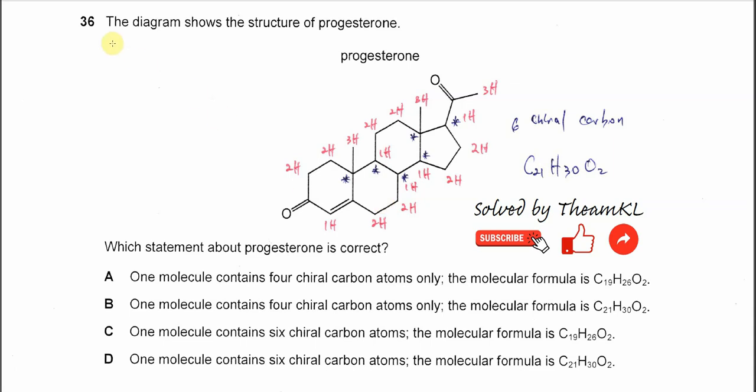Question 36. The diagram shows the structure of progesterone. Which statement about progesterone is correct? Okay, so this structure is quite complicated, quite large. So let's find how many chiral carbons are in there.